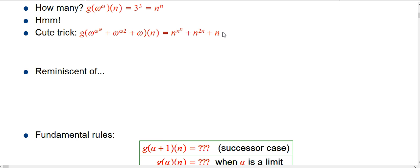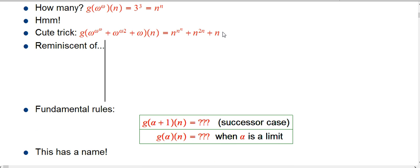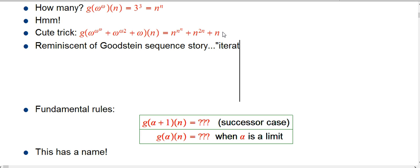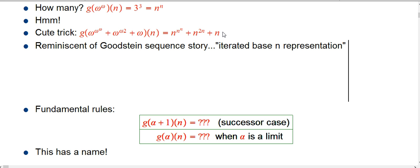One thing I want to mention just briefly is that this is reminiscent of the Goodstein sequence story, and that's not at all accidental. The Goodstein sequence was about iterated or generalized base-n representation of a number.